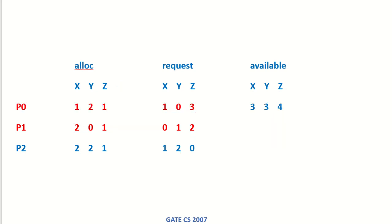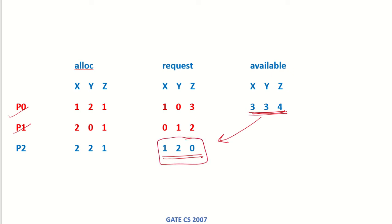Now P0 has finished and P1 has also finished, and the available resources are 3, 3, and 4. We can see that the request of P2 can now be managed by these available resources, so these resources can be given to P2. With this scenario, P2 is the process which will finish last.